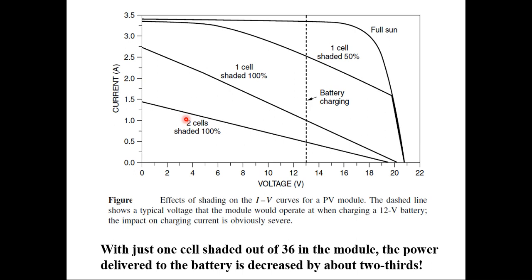That is a reduction of 1.75A in current. Similarly, if two particular cells are shaded 100%, the charging current is still around 0.5 to 0.75A. So the outcome of this example is: with just one cell shaded out of 36 in the module, the power delivered to the battery during charging decreases by about two-thirds of its total output capacity. The solution is the incorporation of bypass diodes and blocking diodes — blocking diodes in series, bypass diodes in parallel with the PV module.